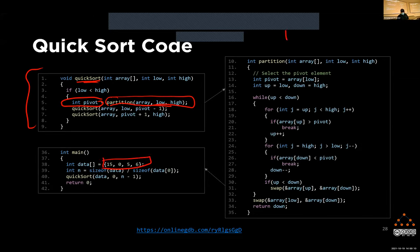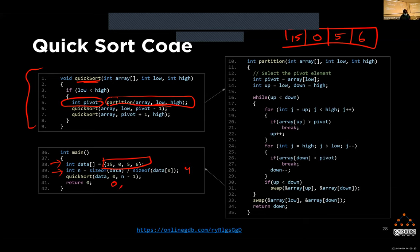Let's say we have the array [15, 0, 5, 6]. When we start, n returns the size of the array — four. For quicksort, we apply it from index 0 to 3, which is the last index. Once called from 0 to 3, since low is less than high, we call our partition function, which takes in the array along with low=0 and high=3.